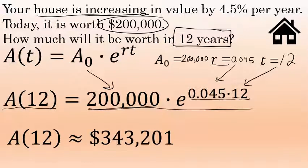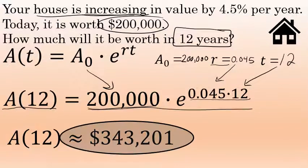And it will give you $343,201, rounded off to the nearest dollar. So, assuming the house is worth $200,000, it increases on average by 4.5% each year. In 12 years, it will be worth $343,201.